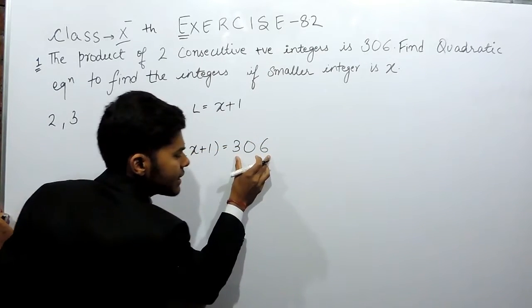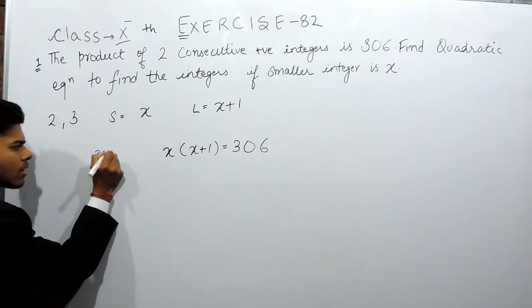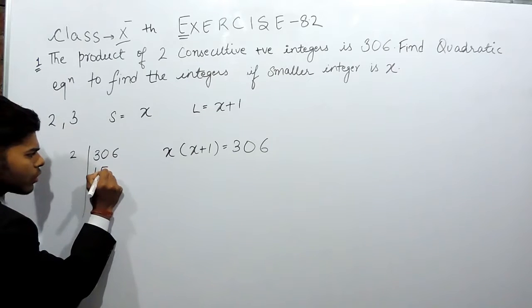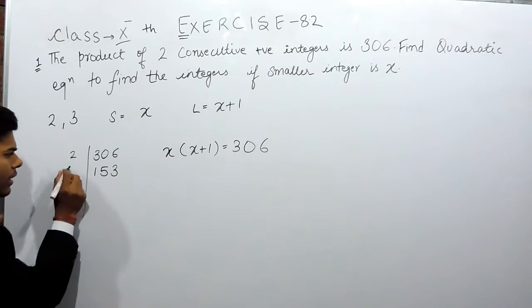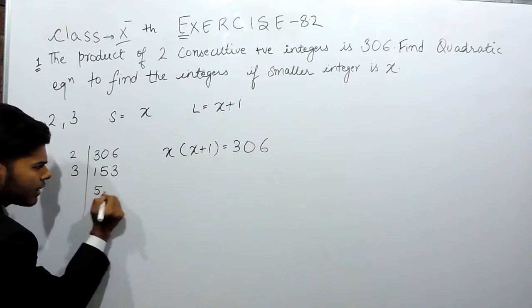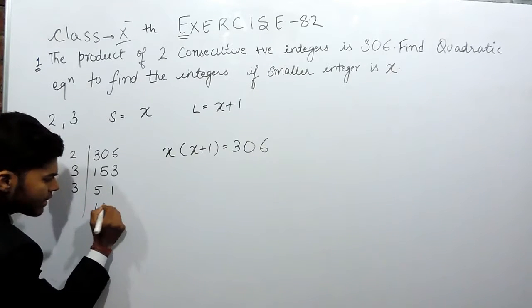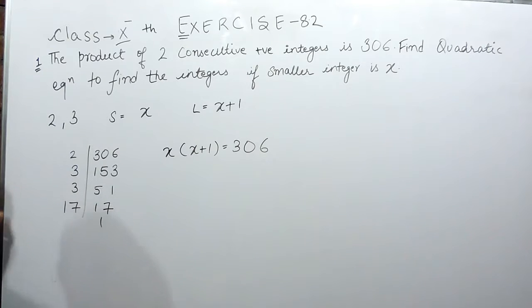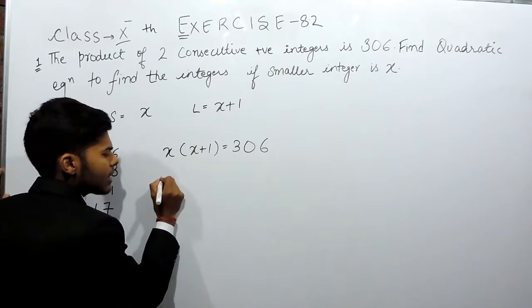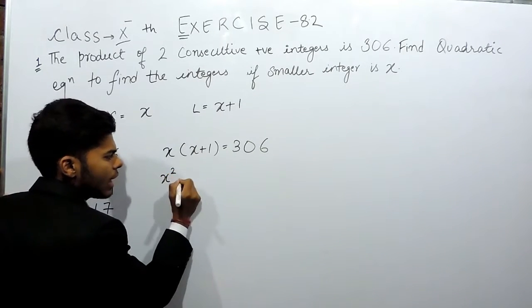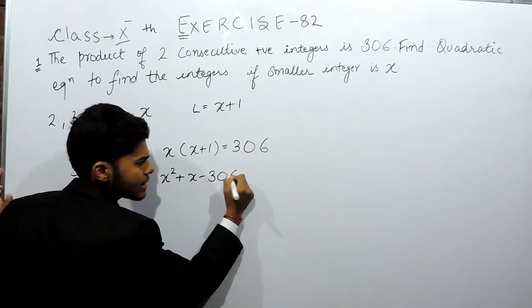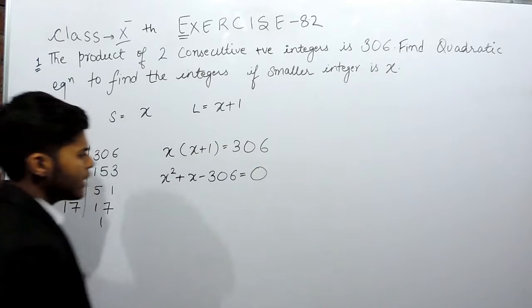Now we will factorize 306: 2 into 153, 3 into 51, 3 into 17, 17 into 1. Now we can write this and form it as a quadratic equation: x squared plus x minus 306 equals 0.